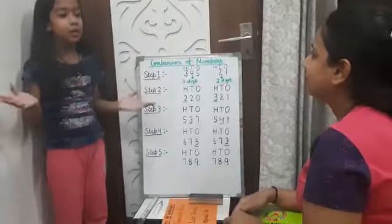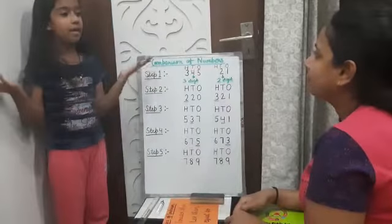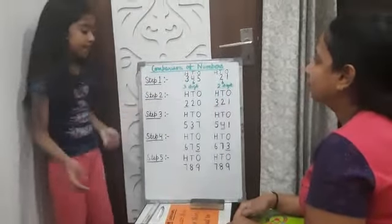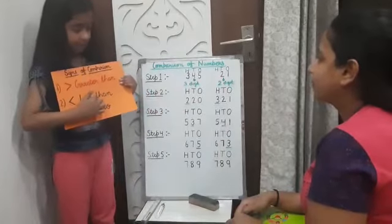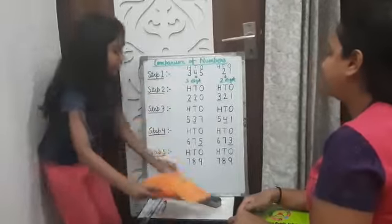Okay, I will tell you. There are three different signs to compare the numbers: greater than, less than, and equal to. Okay ma'am.